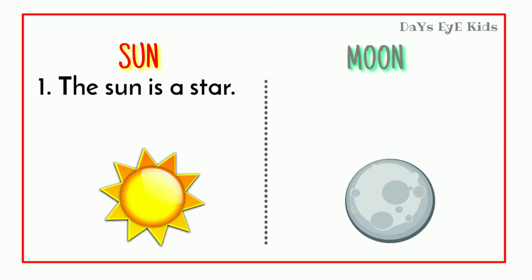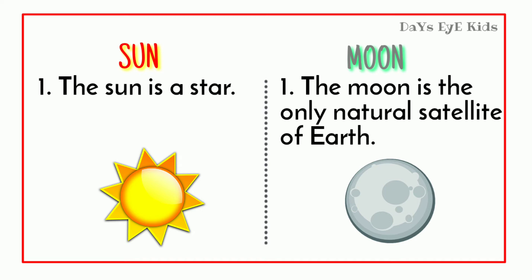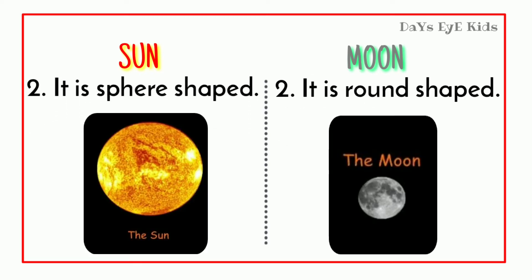The Sun is a star. It is sphere shaped. The Moon is the only natural satellite of Earth. It is round shaped.